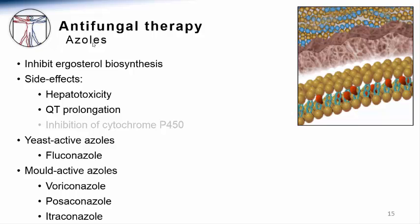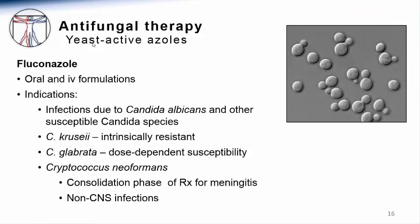The azoles can be subdivided into those agents with activity primarily against yeasts and those with expanded activity against molds. The most important yeast-active azole is fluconazole. This medication is available in both IV and oral forms and has excellent oral bioavailability, so whenever possible it should be administered orally to minimize cost and treatment complexity. Fluconazole is often used to treat infections due to susceptible Candida species, especially Candida albicans. Some Candida species, such as Candida krusei, are intrinsically resistant to fluconazole, and species such as Candida glabrata can display dose-dependent susceptibility, requiring very high doses for curative therapy.